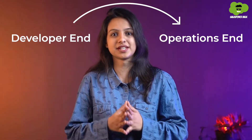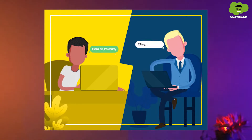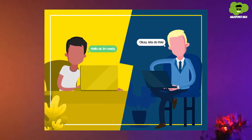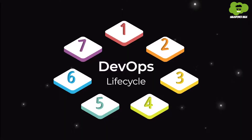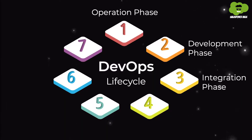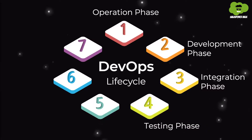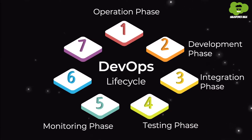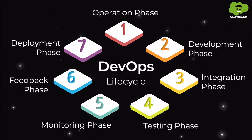It controls the entire software life cycle from the developer end to the operations end. It also improves the connection and promotes collaboration between both departments. The DevOps life cycle consists of different phases: operation phase, development phase, integration phase, testing phase, monitoring phase, feedback phase, and deployment phase.